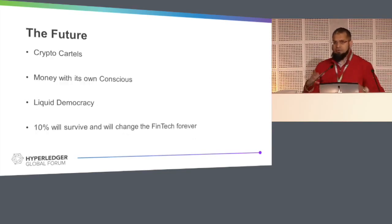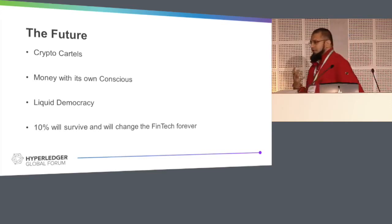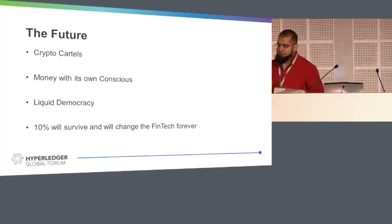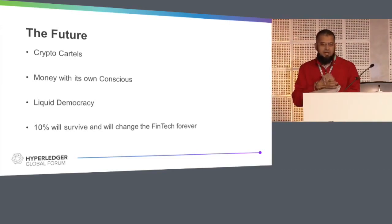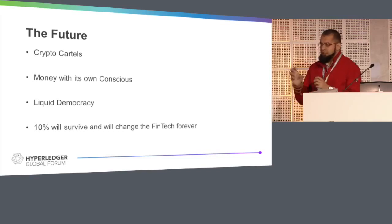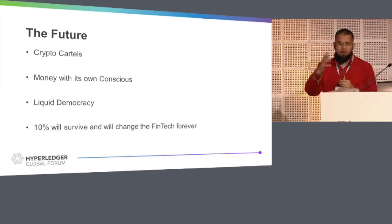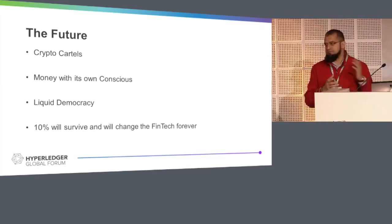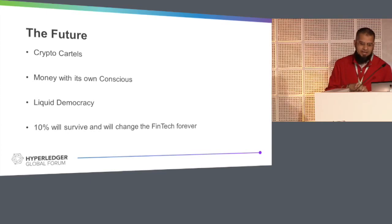So where are we going with all of this? Number one, we are going towards crypto cartels. Think of a computer program that would block somebody's files and collect money — then it would use that money to hire programmers and freelancers to improve its code and go on and on. We have already seen some incidents like this, and it will become very, very big and very hard to control.